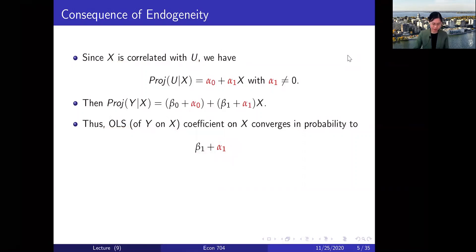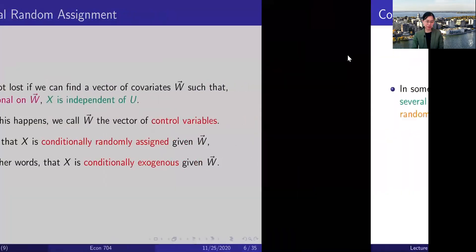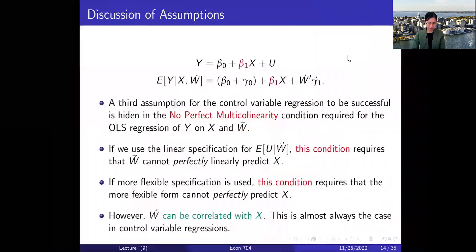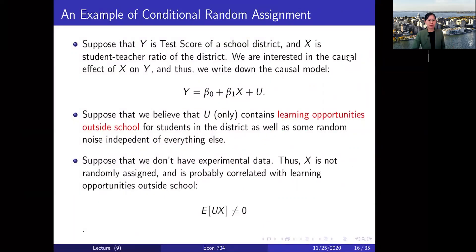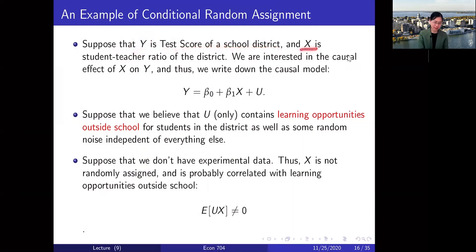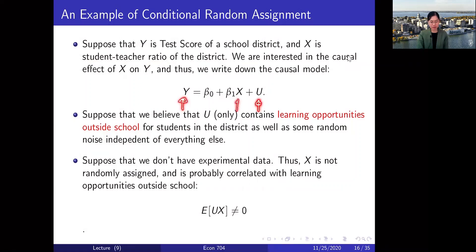That was our brief digression. Now let's go to the examples of control variable regression. In the first example, consider y being the test score of a school district — the school district is the unit of our data. x is the student-teacher ratio of the district, that is how many students per teacher, and we are interested in the causal effect of x on y.